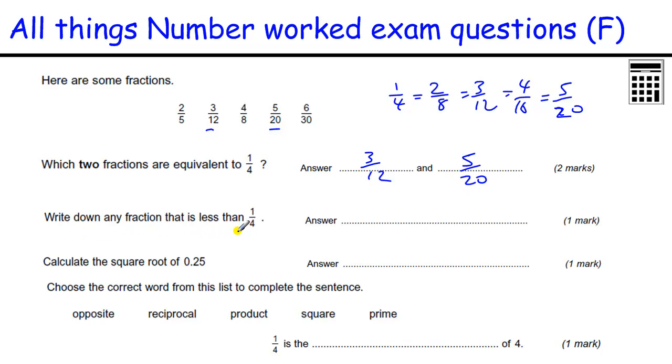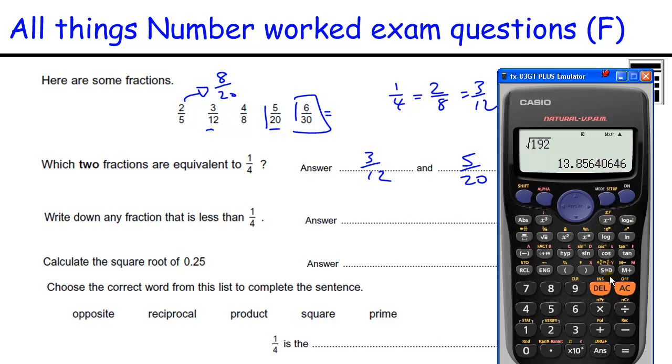Write down any fraction that is less than a quarter, so the top number has got to be less than a quarter of the bottom number. We could change that up to make it out of 20, we get 8 out of 20. And as we know, 5 out of 20 is a quarter. So the answer must be 6 over 30. How do we know that that's the answer? We could use our calculator. 6 divided by 30, and it will say 0.2, which is less than a quarter, which is 0.25, so 6 over 30.